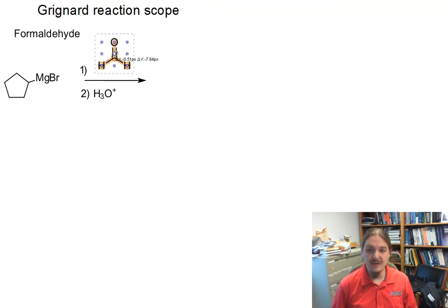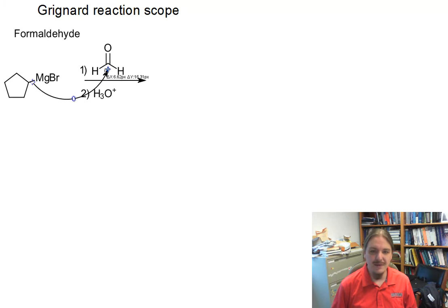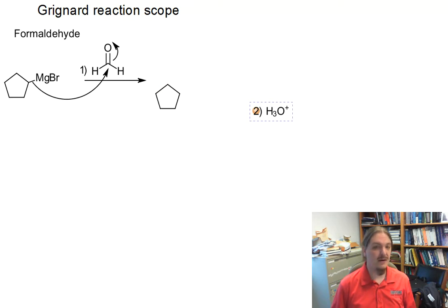Cyclopentyl Grignard reagent, formaldehyde, and then the other bonus in this video is I'm going to include when I'm presenting some mechanism arrows, if I can get them to behave. Let's drag this up here a little bit to at least show them and to remind you of some of the steps along the way. So if we have formaldehyde, formaldehyde reacts with any Grignard reagent to essentially add one carbon and make a primary alcohol off of that position.